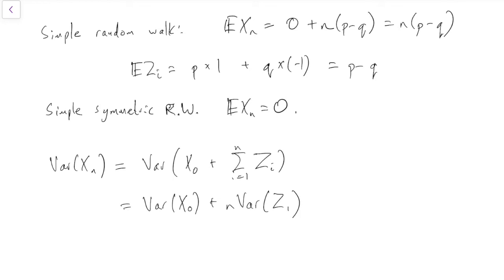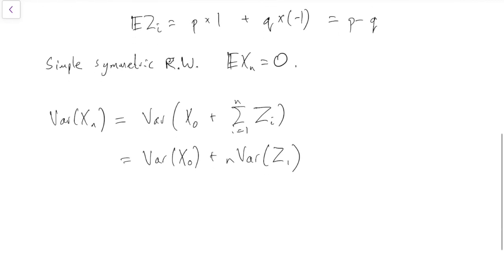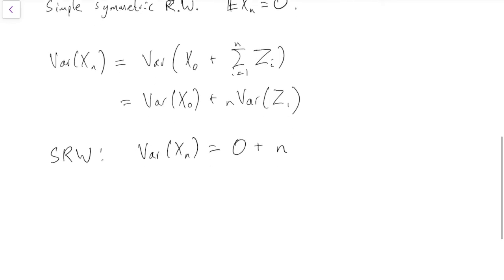So if you give me an X0 and a distribution for the Z's, I can tell you the variance of your random walk. What is it for the simple random walk? Simple random walk. The variance of X0, well for the simple random walk we definitely start from 0. We certainly start from 0, so there's no variance there. We know it's exactly 0. What about the variance of Z1? That'll be a bit trickier to work out.